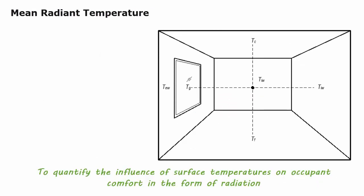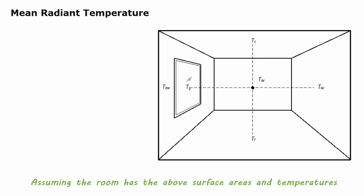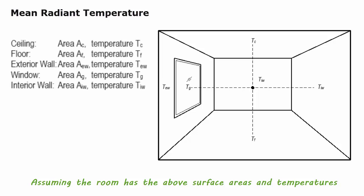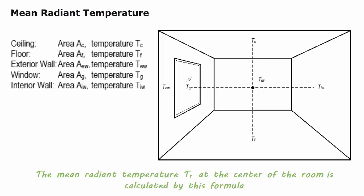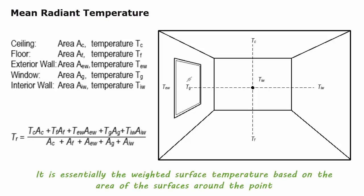To quantify the influence of surface temperatures on occupant comfort in the form of radiation, mean radiant temperature is used to measure the average temperature of the surfaces surrounding a point of interest. Assuming the room has known surface areas and temperatures, the mean radiant temperature TR at the center of the room is calculated by a weighted surface temperature formula based on the area of the surfaces around the point.